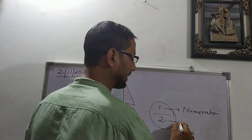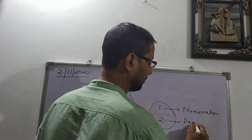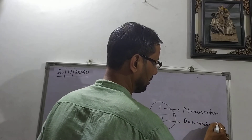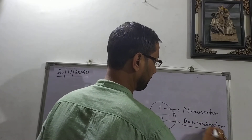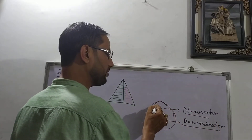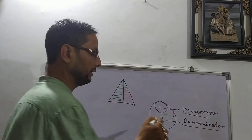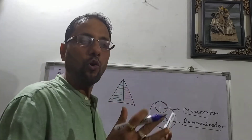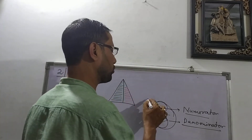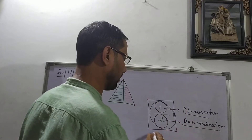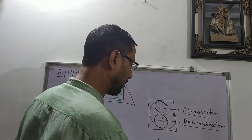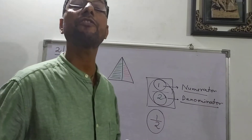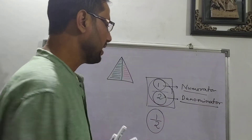As we already discussed in the previous classes, we call this the numerator and we call this the denominator. This is named as numerator, this is named as denominator. So as a whole, what name can I give to this number one by two?